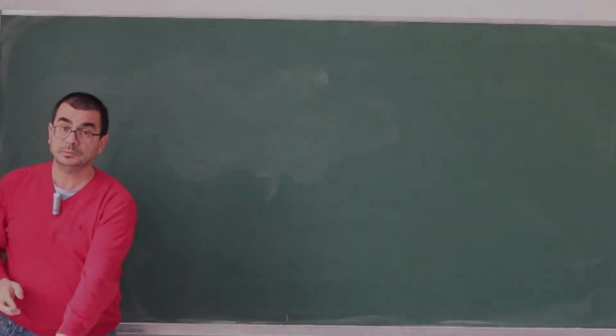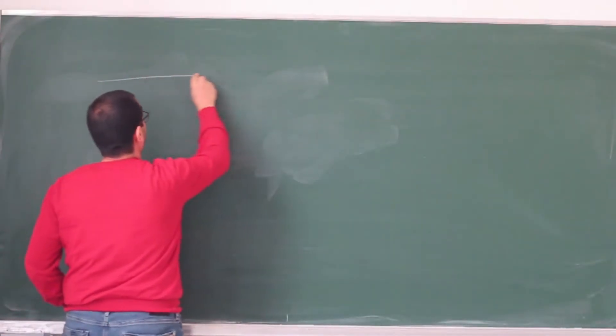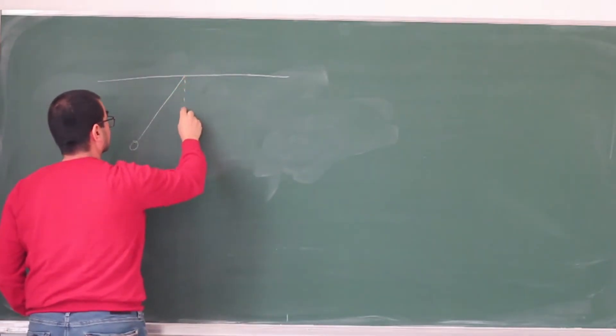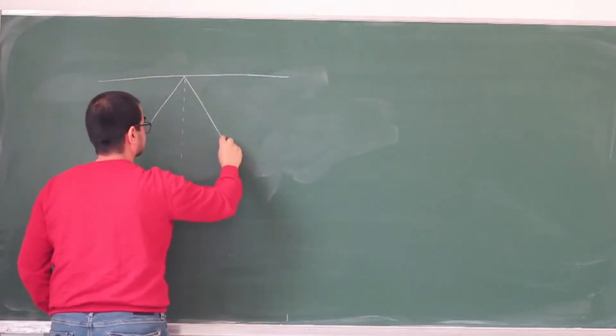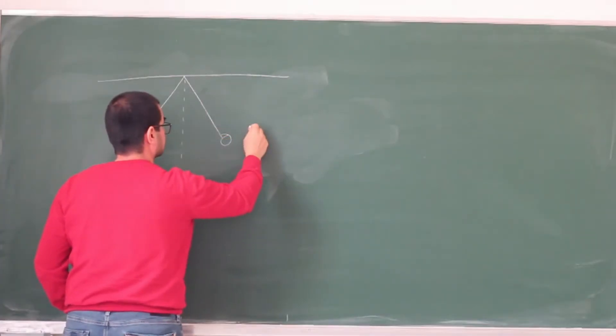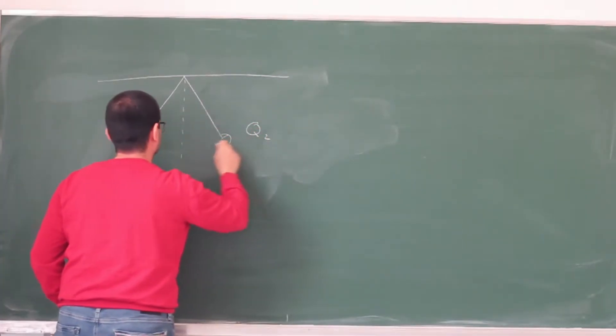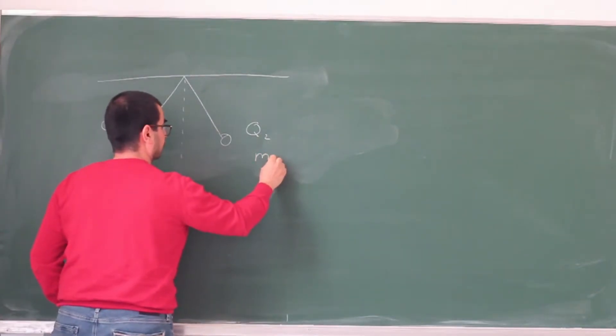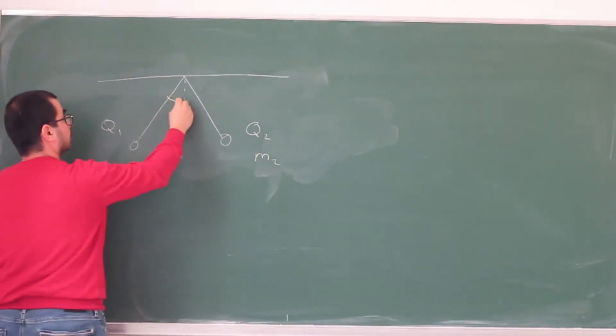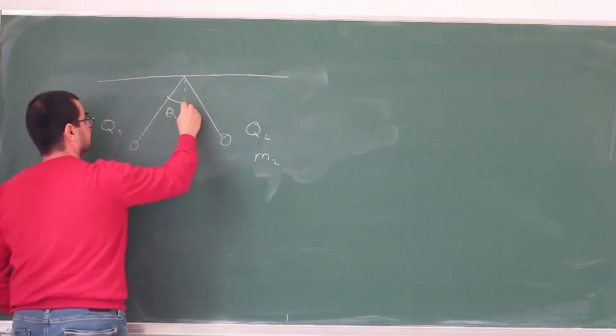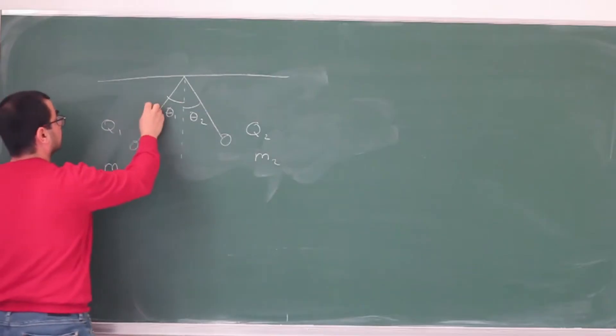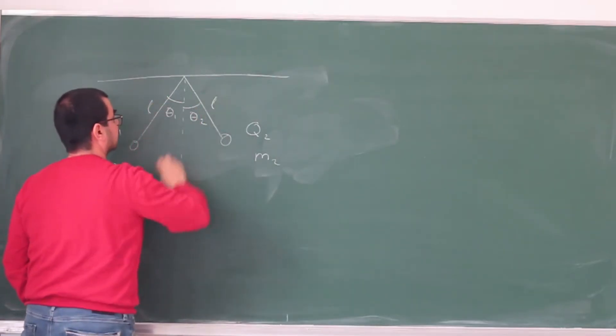Okay, in this problem we have two masses being hung from a ceiling. In fact, two charges, two charged masses. These are called Q2 and Q1, masses M1 and M2. And they make angles theta1 and theta2 with the vertical, and they're hung by ropes of equal length L.